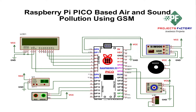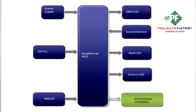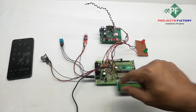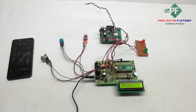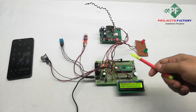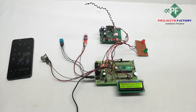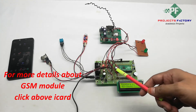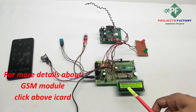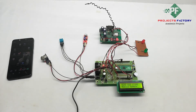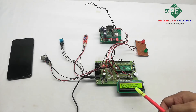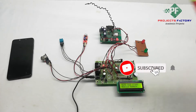Here the entire circuit diagram looks like this. Now we power on the project. After powering on, we have to wait 2 to 3 minutes to get the GSM signal. Once the GSM signal is obtained, the LCD asks us to send a message to store a mobile number. We send the star followed by the mobile number via SMS to this GSM modem.